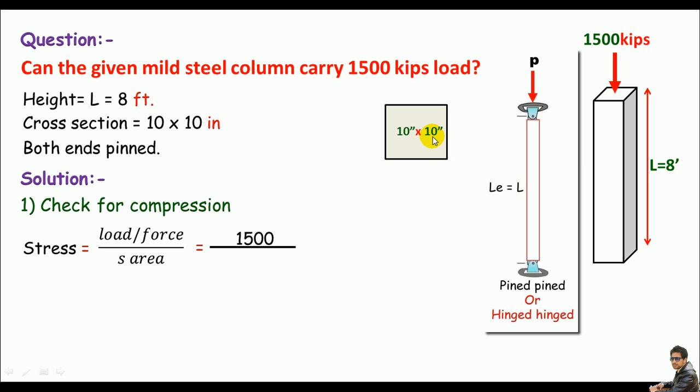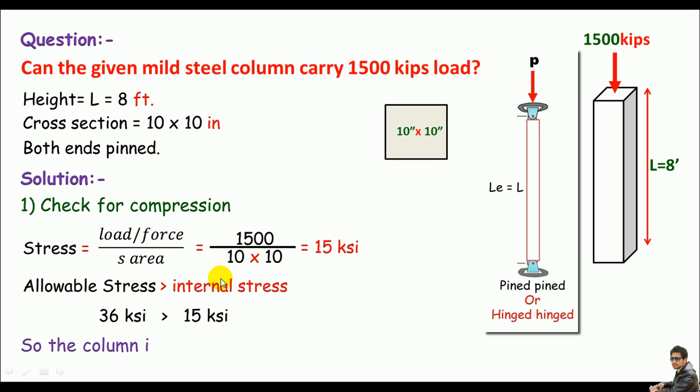The area of a square is always side times side. One side of the column is just 10 inches, so 10 times 10 will be the cross sectional area. Do some math and you'll get 15 ksi as the stress. If the allowable stress is greater than the internal stress caused by the external load, we'll say the column is okay in compression. Let's assume the mild steel is A36, so the allowable stress will be 36 ksi and the internal stress is only 15 ksi. So 36 ksi is greater than 15 ksi, so we can say without any doubt the column is okay in compression.